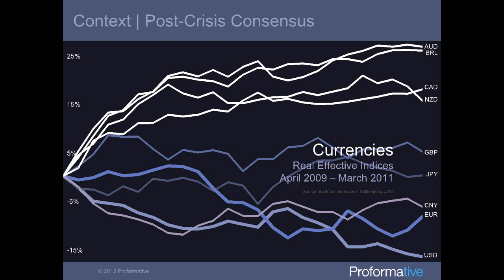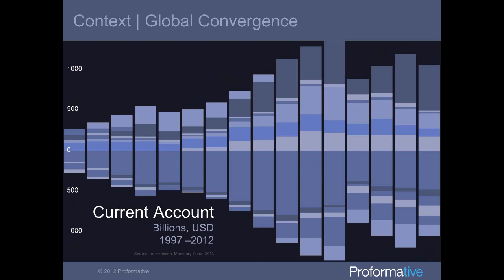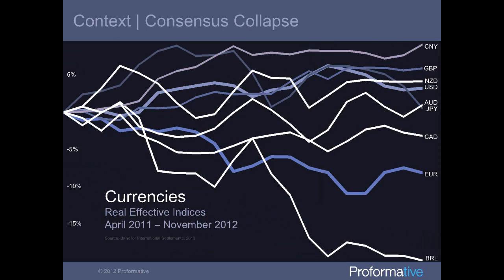With the developed world trapped in recessionary conditions and emerging countries recovering quickly, the strategy was obvious: borrow in developed countries and invest in emerging ones. The dollar and euro plunged for two years after the crisis while commodity-linked and emerging market currencies soared. Whenever you've borrowed heavily in one currency and lent in another, you're always worried about convergence. This is how we began to see the risk-on, risk-off trade — when traders were optimistic they borrowed in dollars or euros and bought risky assets; when they weren't, they sold off quickly and repaid their loans.